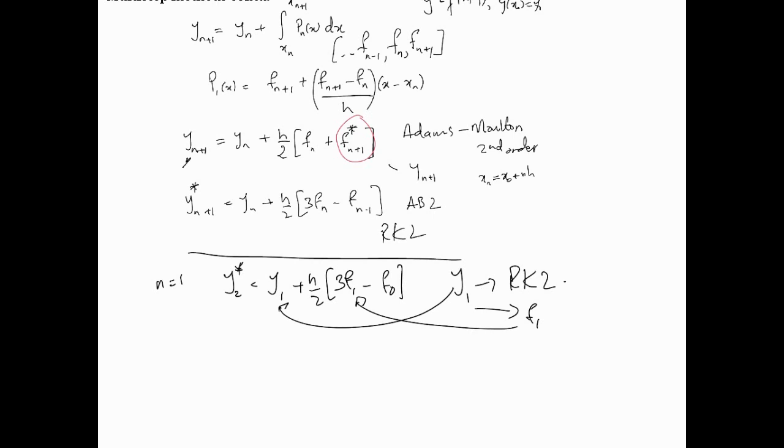Now, then we'll go to the corrector, or the implicit method. So we've got the y2 star, now we'll go to y2. So y2 is going to be of course y1 plus h over 2 into f1 plus f2 star. Now, where would you get f2 star from? Well, y2 star will give us f2 star, along with x2, we can use y2 star to give us f2 star. Now that goes in here, that f2 star goes in here, and that means now we are able to calculate y2.